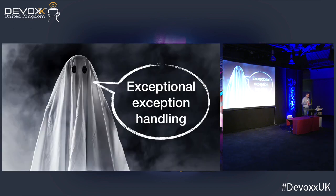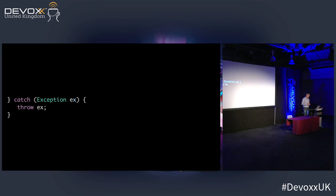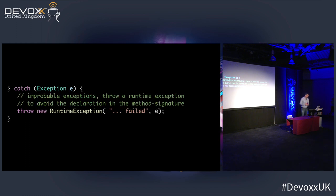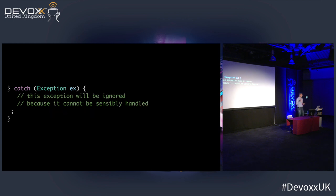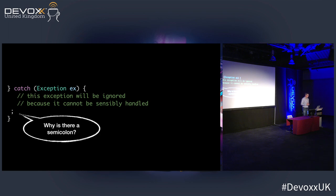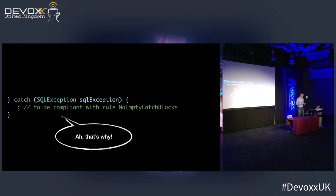The next topic is exception handling, and there are a few classics. For instance, the useless catch, or wrapping a checked exception in an unchecked exception so you get the worst of both worlds, or the empty catch. In this specific instance I wondered: why is there this semicolon? And then I found the next gem, and I knew.